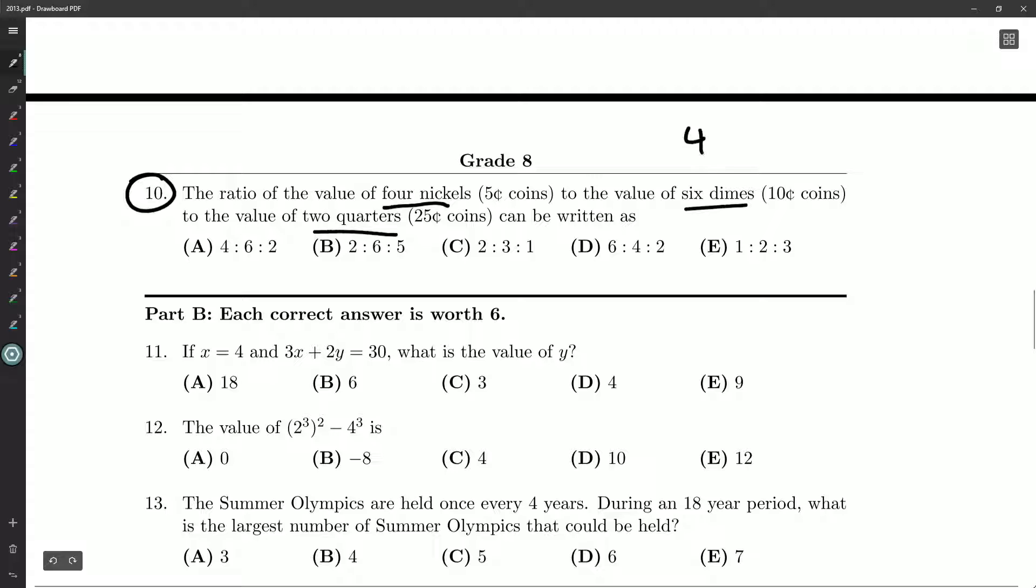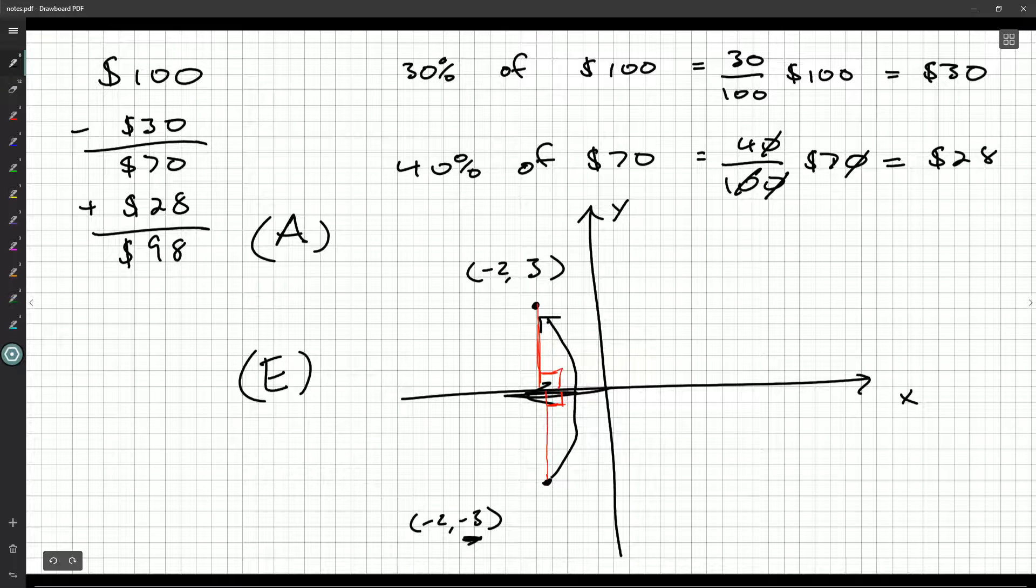Now, this is not 4 to 6 to 2, which when you divide by 2 would be 2 to 3 to 1, which would be answer C. They want the value of 4 nickels. Otherwise, they wouldn't need to tell me nickels are 5 cent coins, dimes are 10 cent coins. So we need to figure out how much money we've got here.